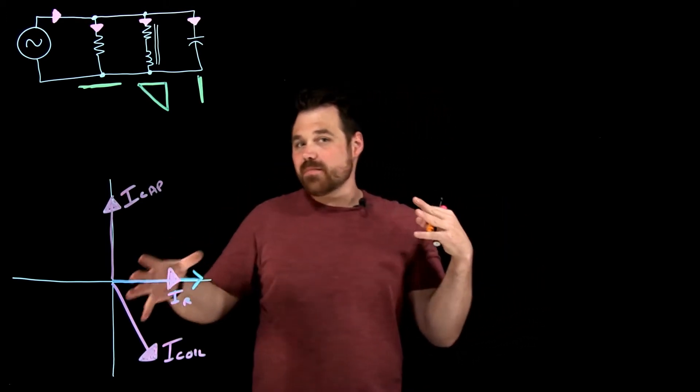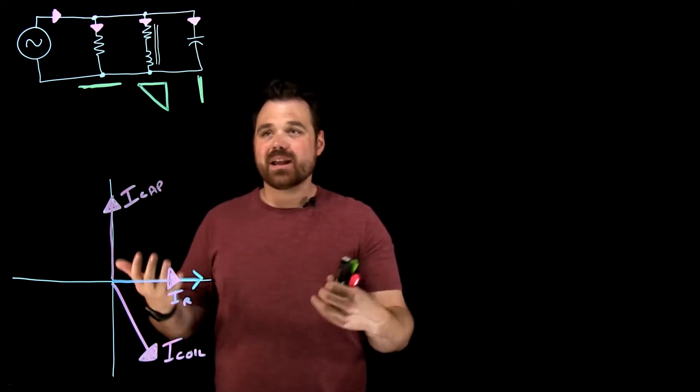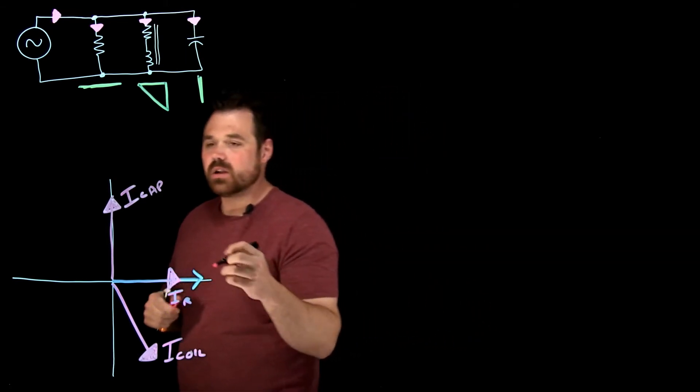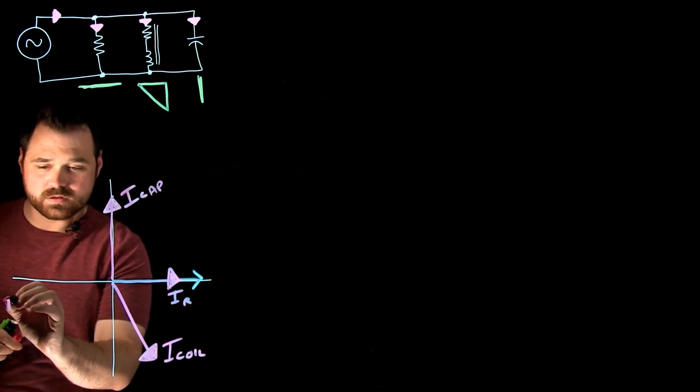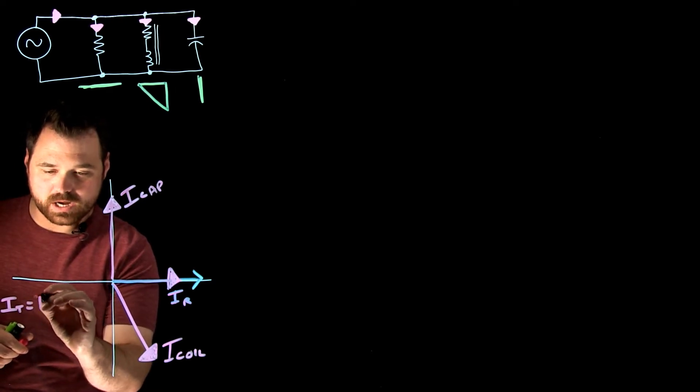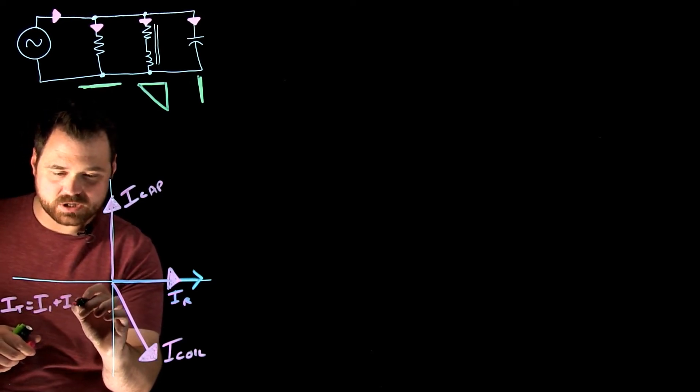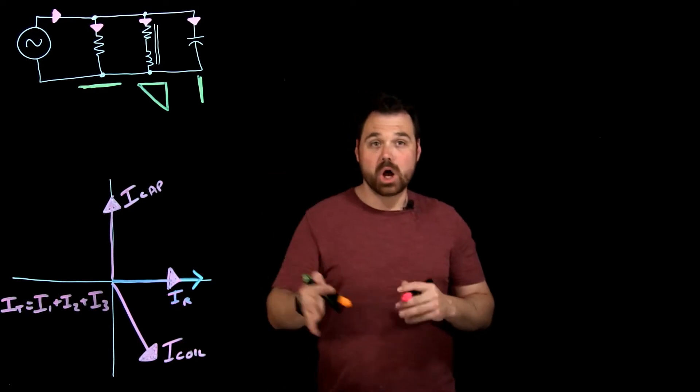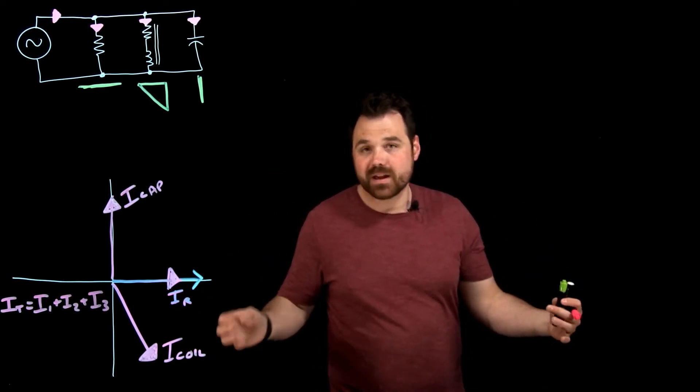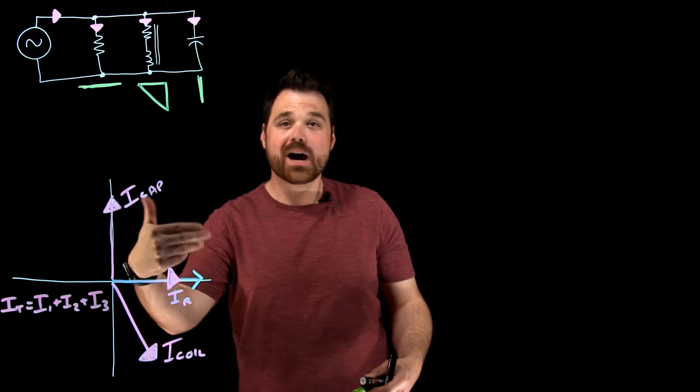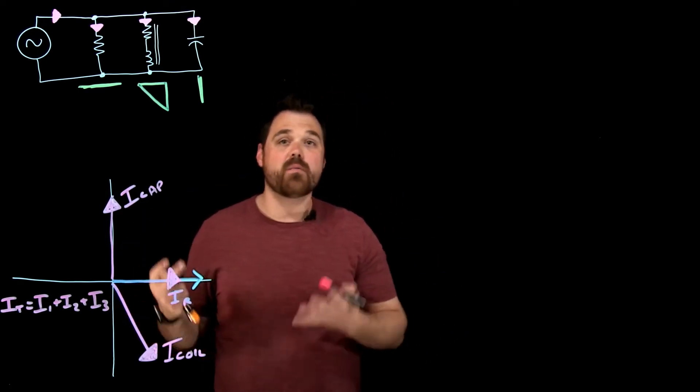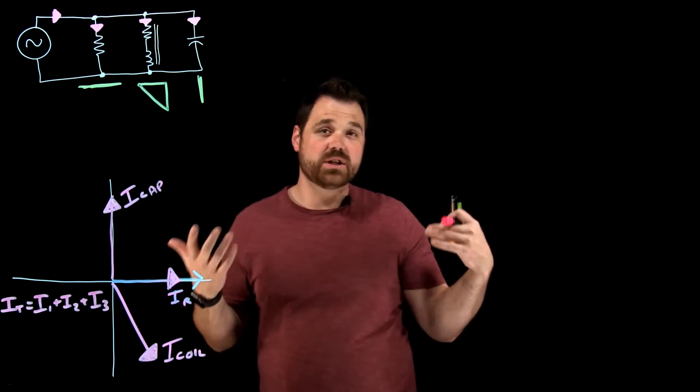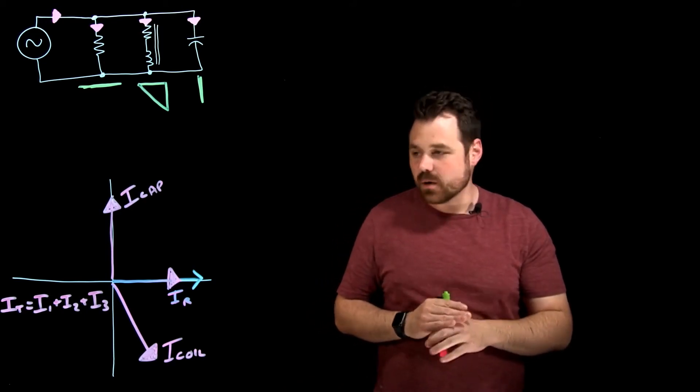Now, in order to get the total current for the circuit, what would I need to do? Well, in order to get the total current, you would go I total equals I in branch one, plus I two, plus I three. Using Kirchhoff's current law, you would add them up. Now, the trick here is because they are happening at different times or different angles, you need to add them up what we call vectorally. So you're gonna do that through either complex numbers or through an HV chart, which I go through in quite a few of my other videos.